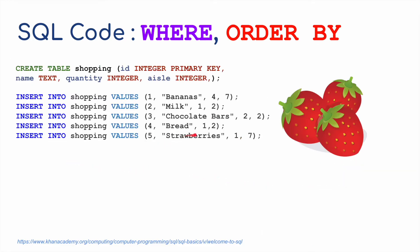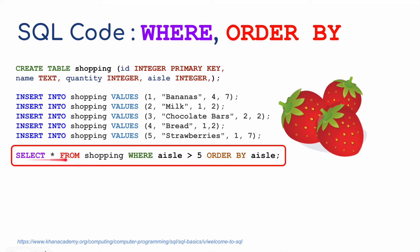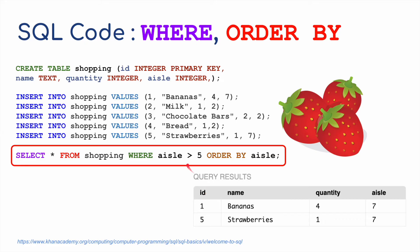I've added strawberries to the shopping basket. Now we're going to use WHERE and ORDER BY. I'm going to select everything from the shopping table where the aisle is greater than five, and order the values by the aisle column. The only aisles greater than five are aisle seven — which has chocolate bars and strawberries. The results are then displayed ordered by aisle number.